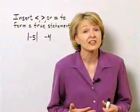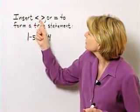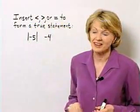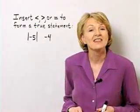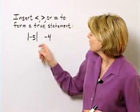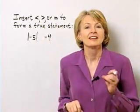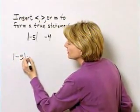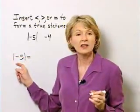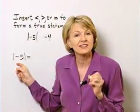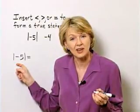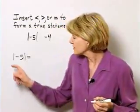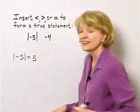Now that we have the definition of absolute value, let's insert this symbol to form a true statement. I have the absolute value of negative five and negative four. In order to insert a correct symbol, let's first find the absolute value of negative five. The absolute value of negative five is negative five's distance from zero on a number line. Negative five lies a distance of five units from zero, so the absolute value of negative five is five.